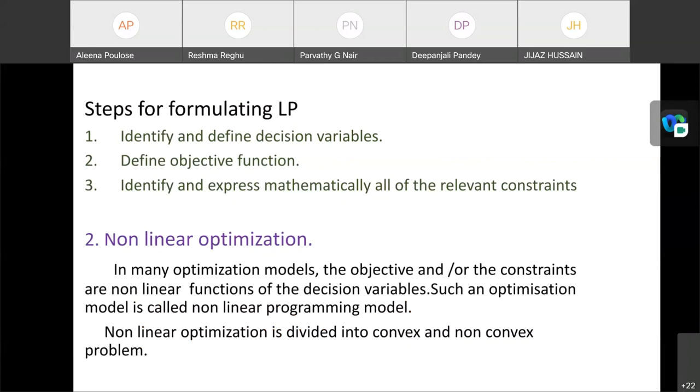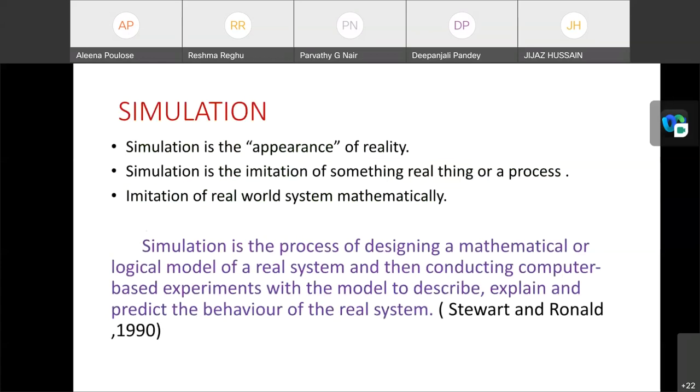Next one is non-linear optimization. In many optimization models, the objective and or the constraints are non-linear functions of the decision variables. Such an optimization model is called non-linear programming model. Non-linear optimization is again divided into convex and non-convex problems. These are about optimization.